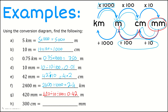Last one: from centimeters to millimeters. Centimeters to millimeters, I'm going to multiply by 10. So 300 times 10 equals 3,000 millimeters.